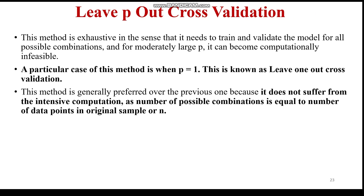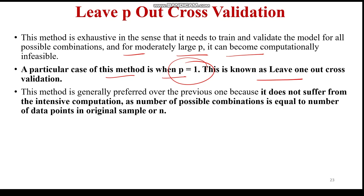This leave-p-out method is exhaustive in the sense that it needs to train and validate the model for all possible combinations, and for moderately large p it can become computationally infeasible. A particular case is when p equals 1, known as leave-one-out cross-validation. For example with 100 items, 99 are used for training. This method is generally preferred over leave-p-out because it doesn't suffer from intensive computation, as the number of possible combinations equals the number of data points n.